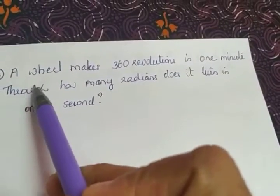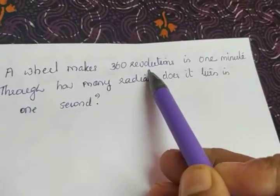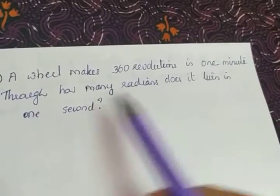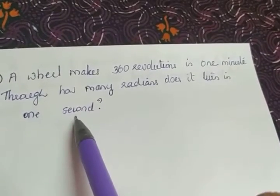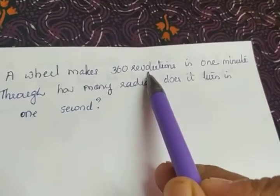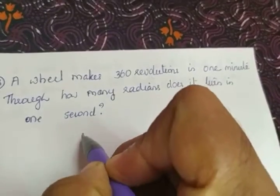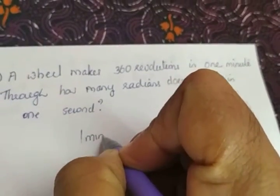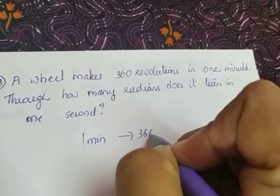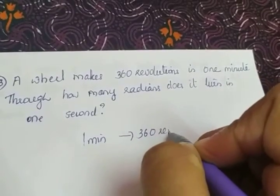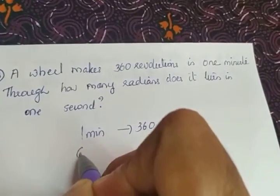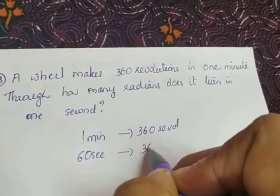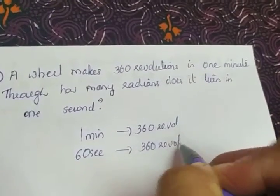The next question: a wheel makes 360 revolutions in one minute. Through how many radians does it turn in one second? A wheel makes 360 revolutions in one minute, meaning in one minute it takes 360 revolutions. One minute has 60 seconds, so in 60 seconds it takes 360 revolutions.